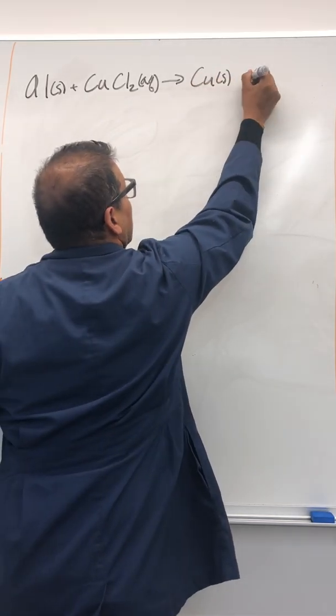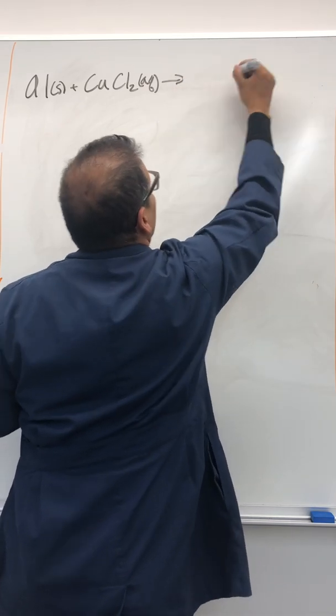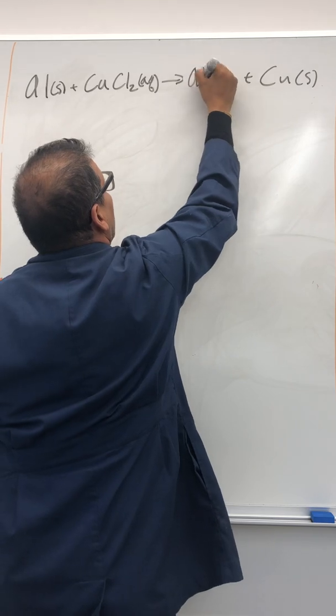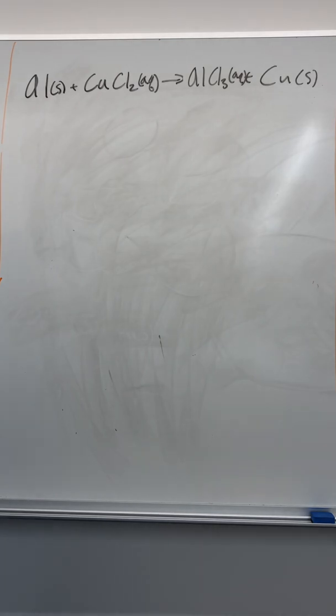copper solid and let's actually flip it. Copper solid and aluminum chloride aqueous. All right, let's figure out why and let's put some numbers in front of each of these reactants and products.